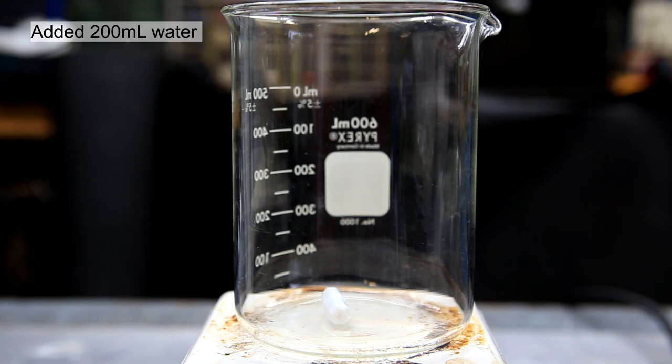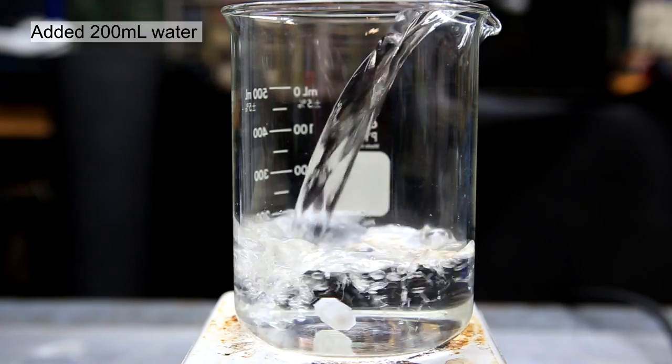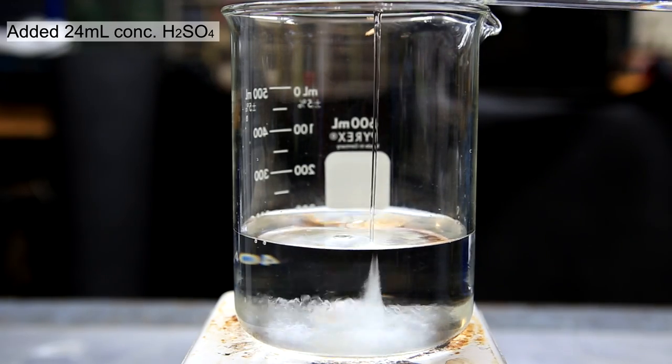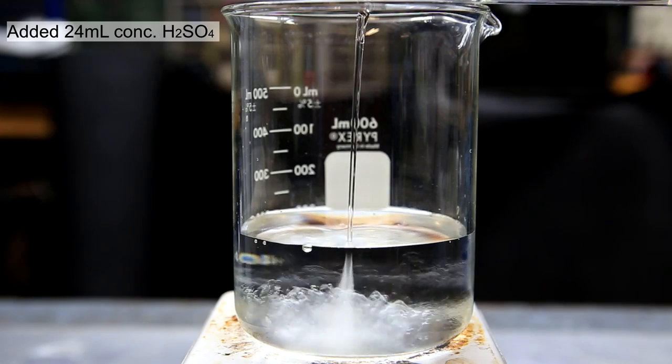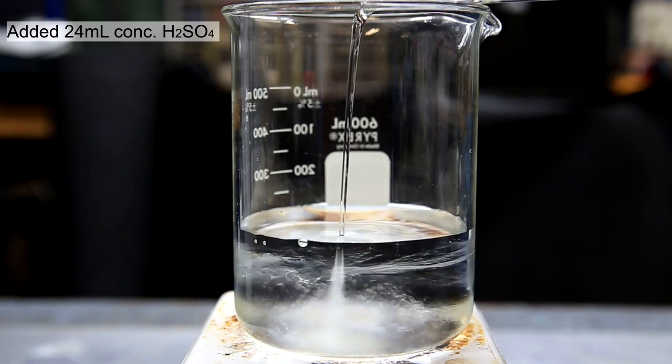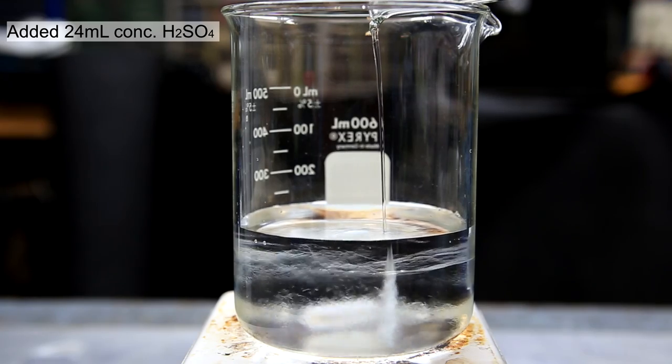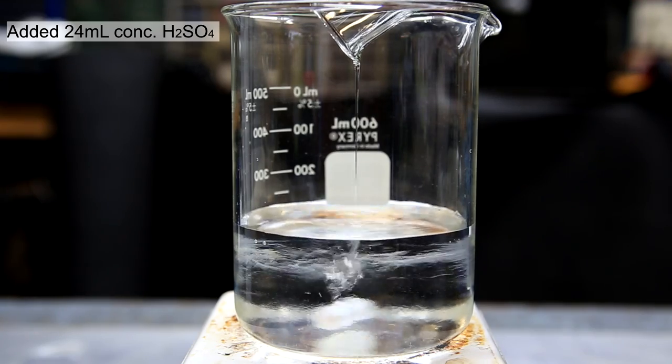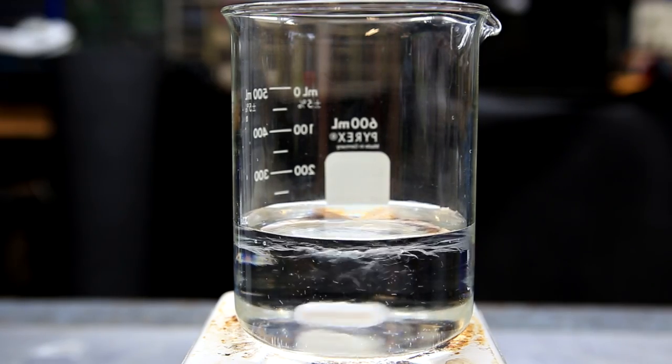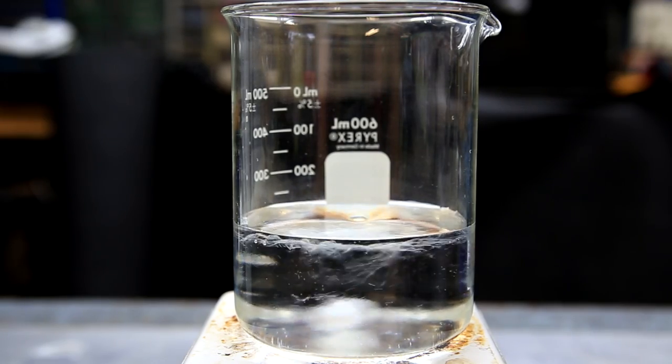To start off, 200 milliliters of distilled water was added to a beaker. Then with rapid stirring was added 24 milliliters of concentrated sulfuric acid. And now for the typical warning: be sure to add acid to water and not the other way around because it can get a little messy and dangerous. Keep stirring it thoroughly until the sulfuric acid is fully mixed into one homogenous solution.